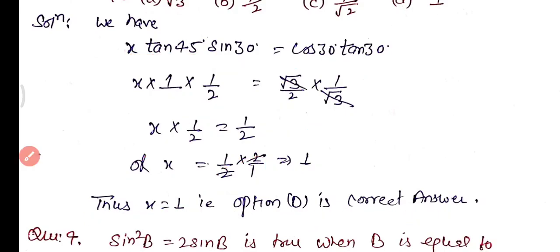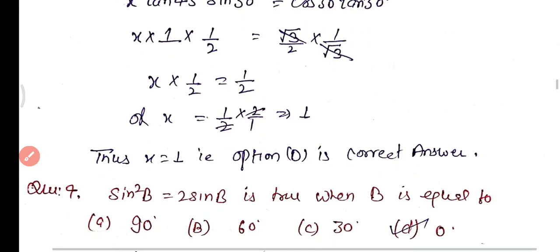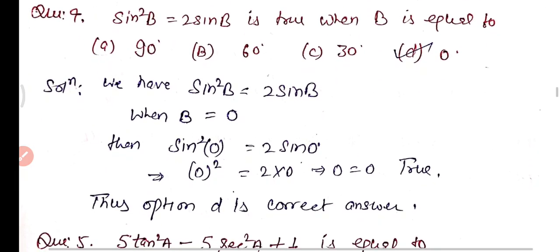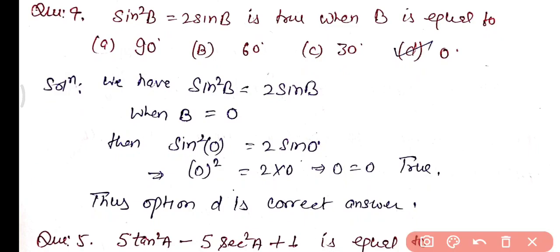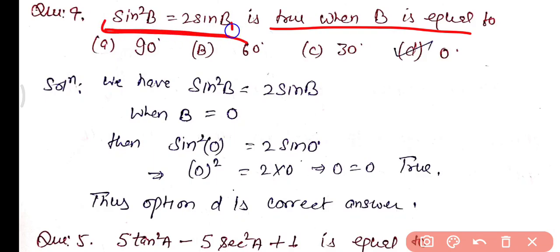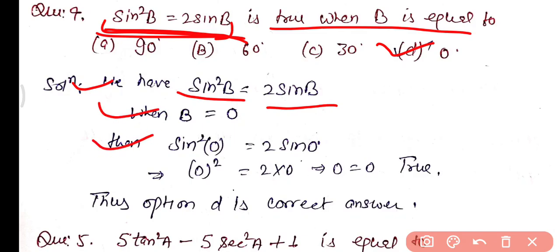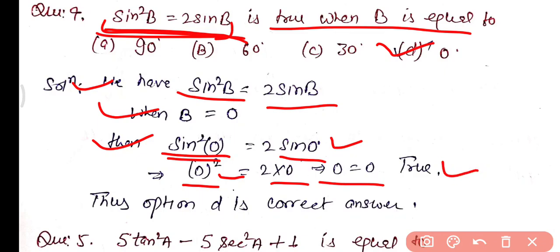Question 4: sin²B = 2sinB is true when B equals? The relation holds when B = 0°. Justification: sin²(0°) = 2sin(0°) → 0² = 2 × 0 → 0 = 0. The relation is true. Option D is the correct answer.